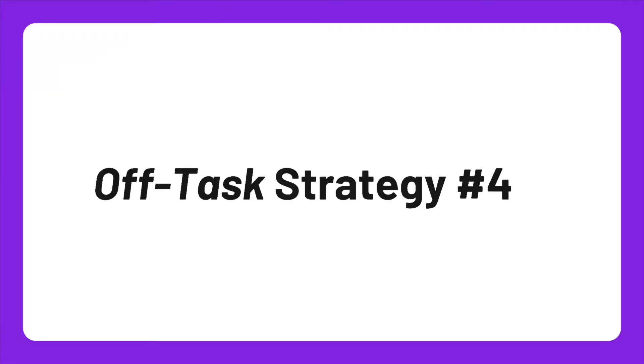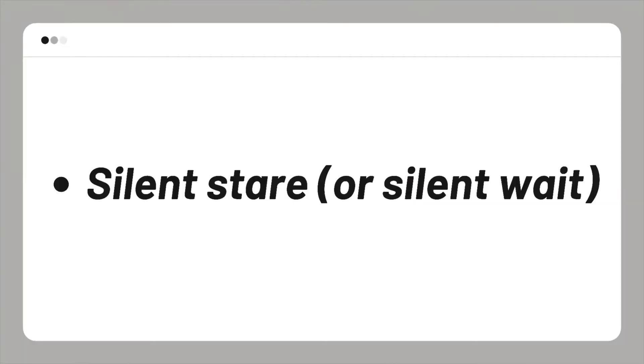One of my favorites is the silent stare — some of my students call it the silent stare of death. If a student just won't stop, you stop without saying anything and just stare — the teacher look. Give them that look, stop, stare, wait. They'll feel uncomfortable and correct their behavior. If they keep on, that's when you go and individually speak with them one-on-one silently.